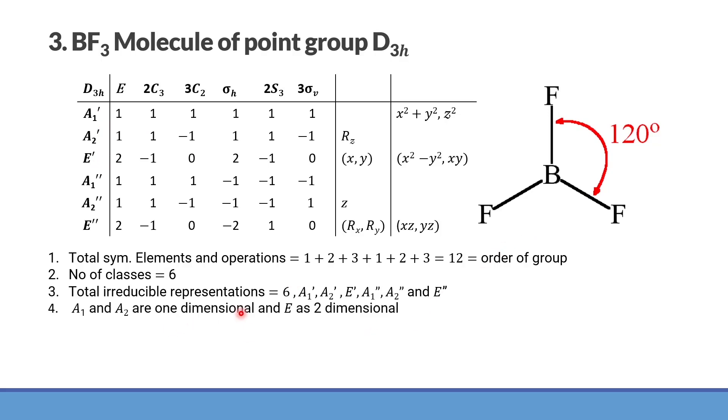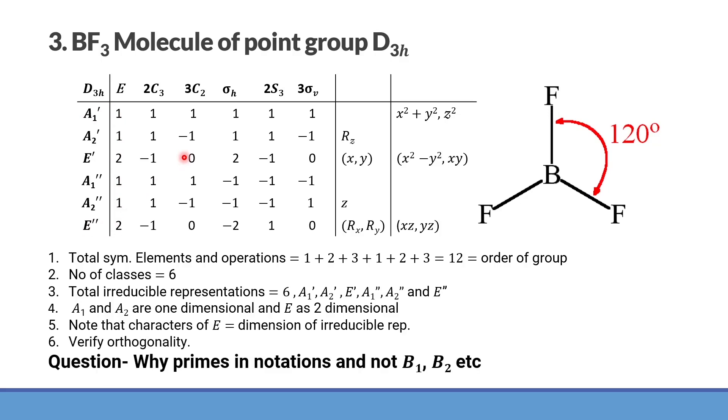And the rest of the things, that is orthogonality. And of course, one more thing. E is a two dimensional irreducible representation. So its character is two here and here also. The rest of them are one dimensional. So you have one, one, one, one and for E, there are two. So you can just assign it. You can verify orthogonality and notice why primes, not B1, B2, etc. You can find yourself.